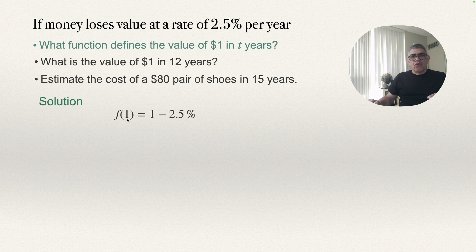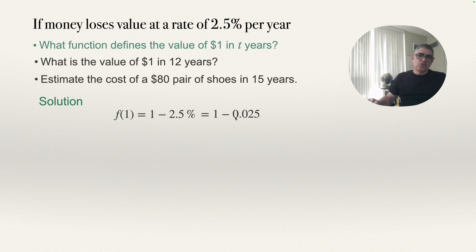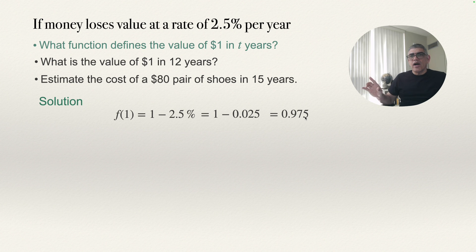The value of $1 in one year — and this one here represents one year — will be $1 minus 2.5% of this $1. So it's actually $1 minus $0.025, or $0.975. This will be the value of $1 in one year.